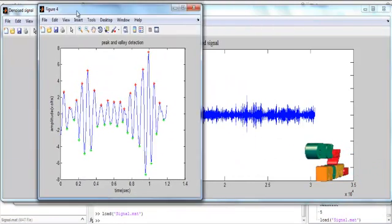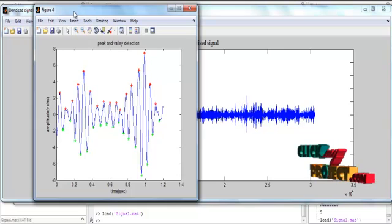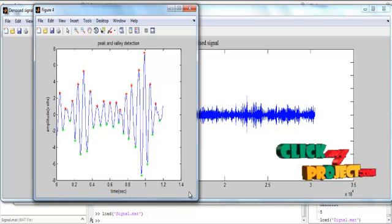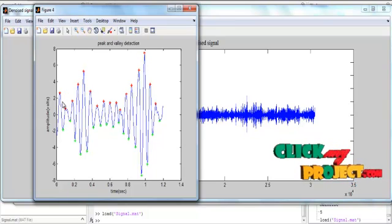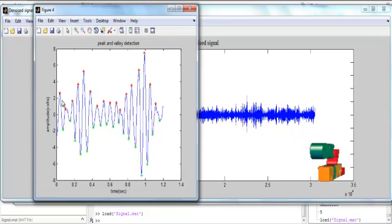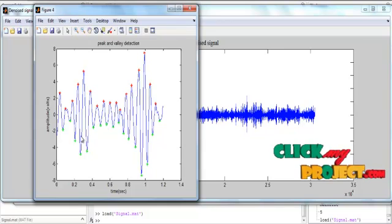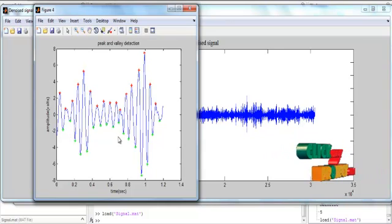Now we can change the range limitation to 0 to 1.4, and the peaks are detected according to the peak values. Here we have peak and valley detection. The red color points represent the peak values, and the green color points represent the valley points.